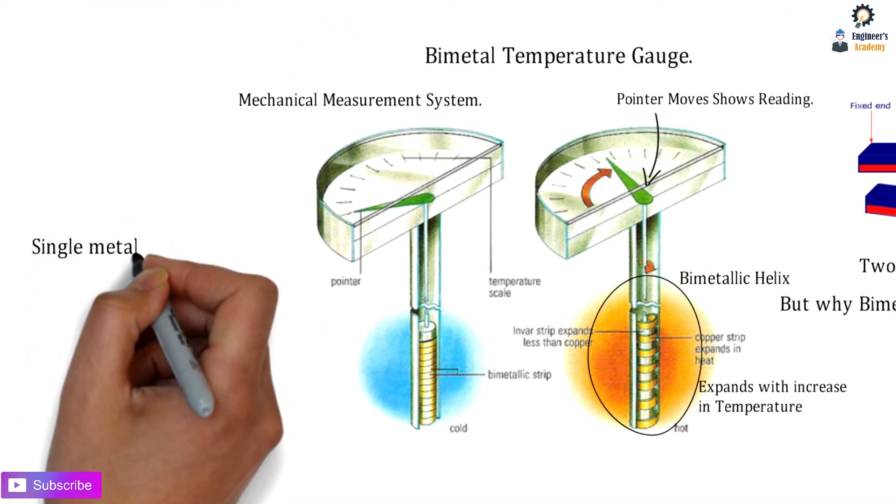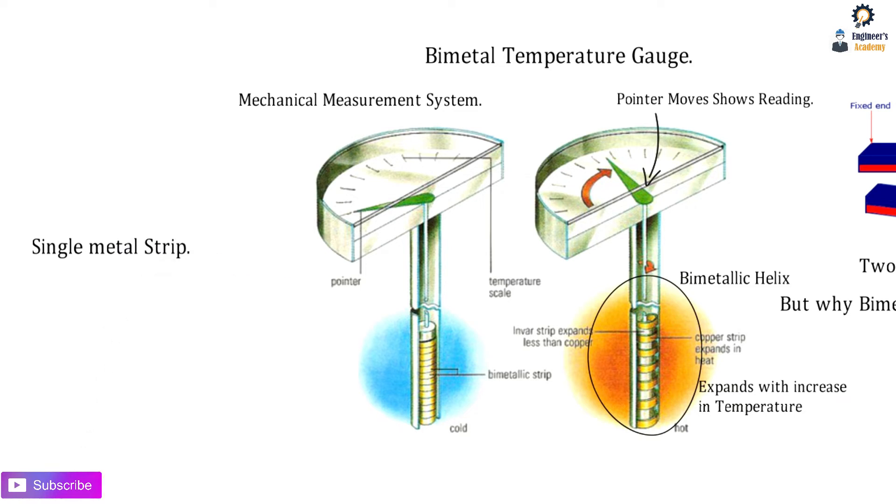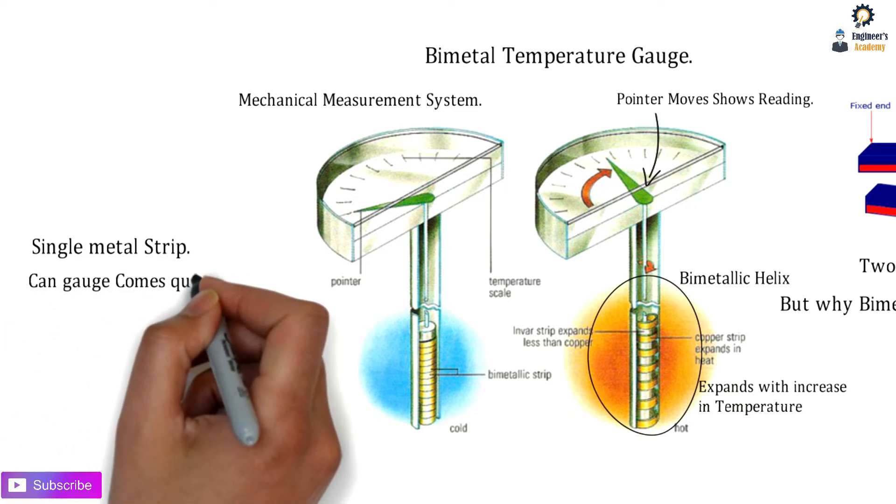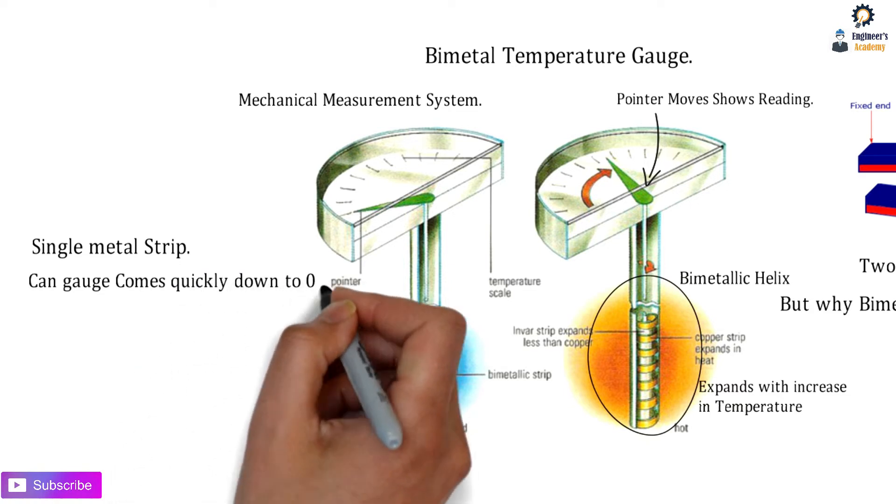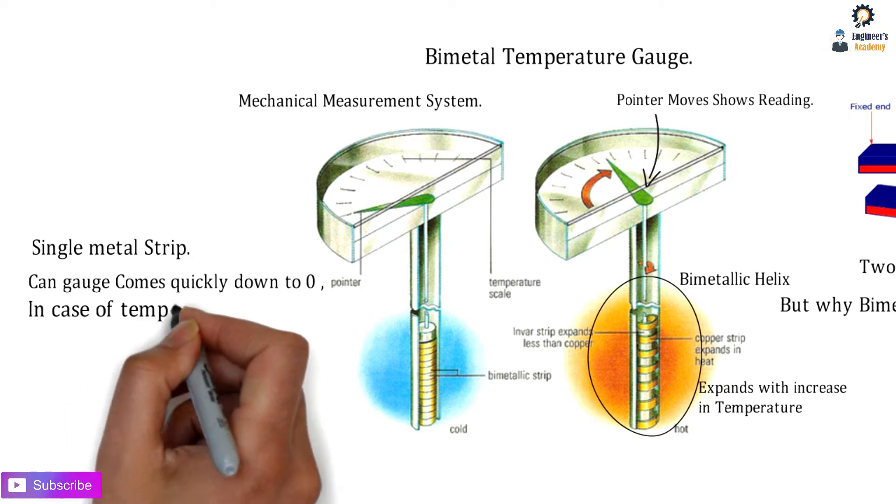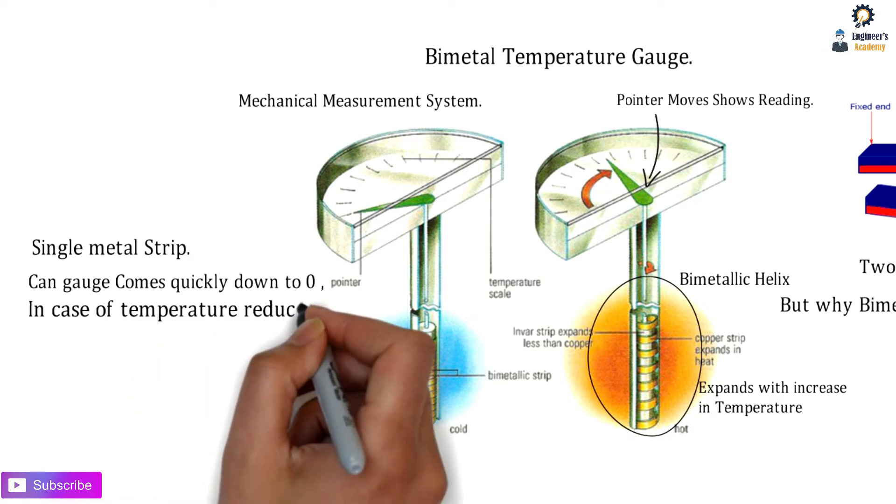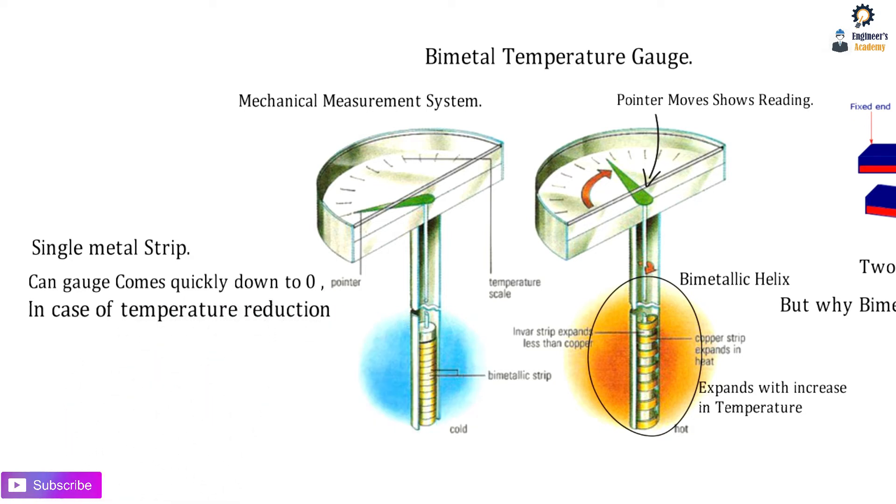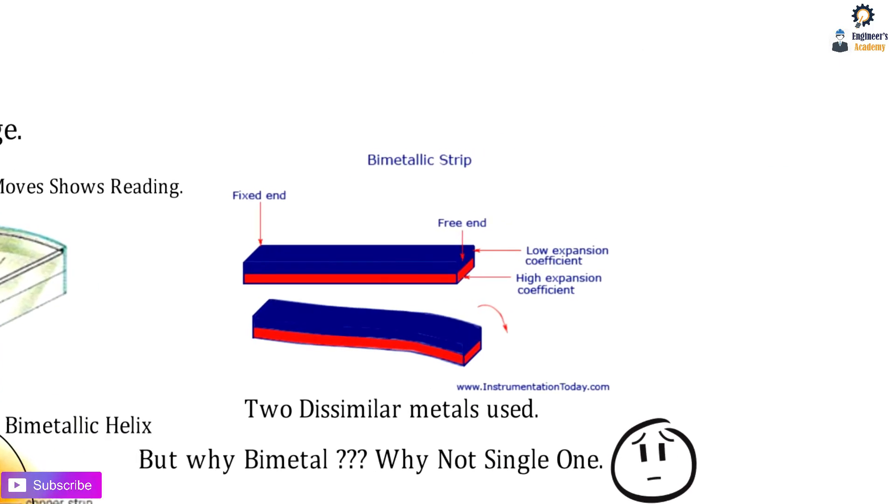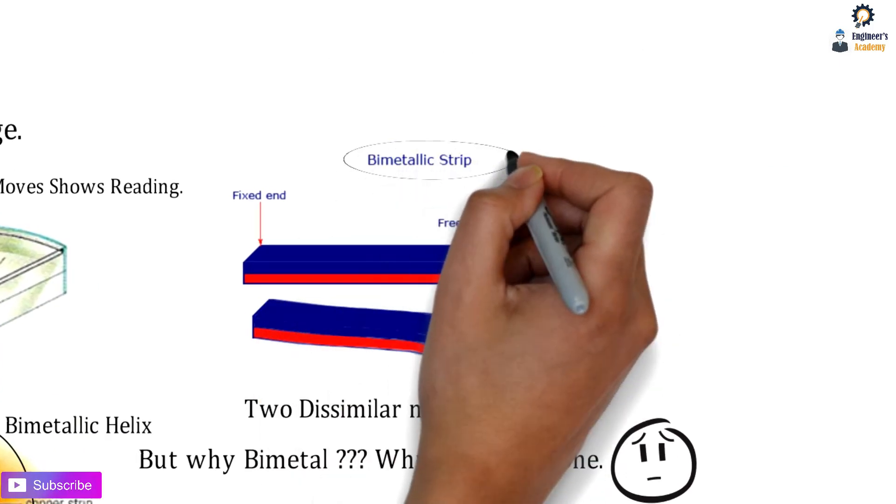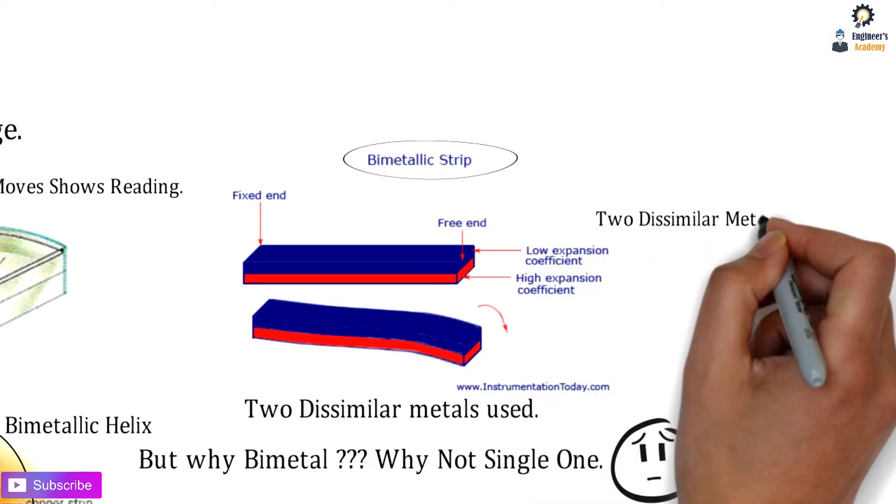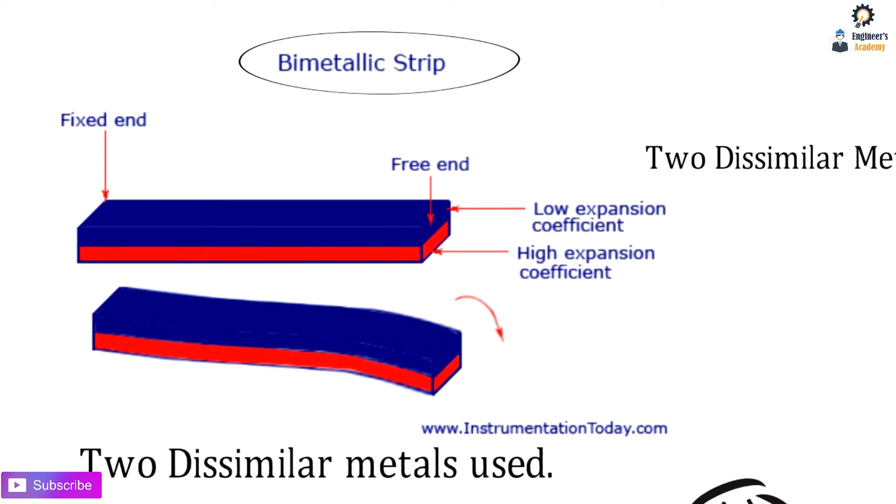If we use a single metallic strip, when temperature is reduced, will the gauge pointer come down quickly to zero? No, the rate of contraction matters - it won't come down directly and quickly to zero.